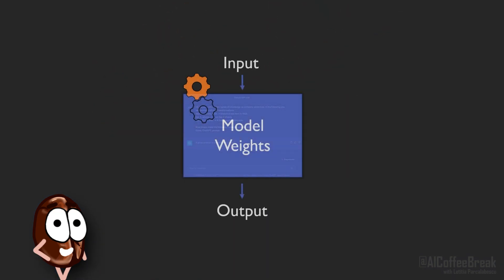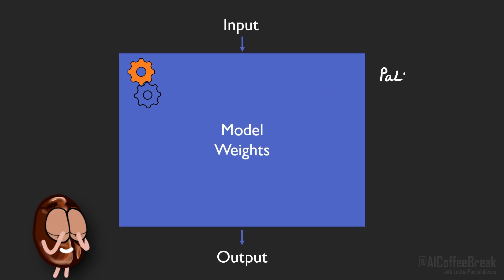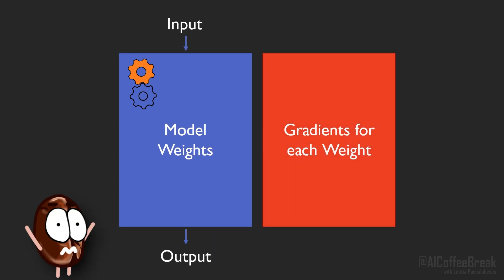But when fine-tuning large language models, at least the open source ones which we can download, we quickly run into a problem with their size. Highly capable large language models are huge because they contain tens to hundreds of billions of parameters. And during fine-tuning we need to load all of these parameters in our GPU, just like for inference. But we also need roughly double the amount of space to save the respective gradient for each parameter.